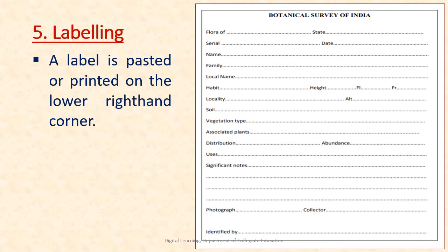The fifth step is labeling. A label is pasted or printed on the lower right-hand corner of a herbarium sheet. The label should indicate: locality, altitude, soil type, vegetation type, associated plants, habit, date and time of collection, name of the collector, common name, scientific name, and other information related to the plant specimen.